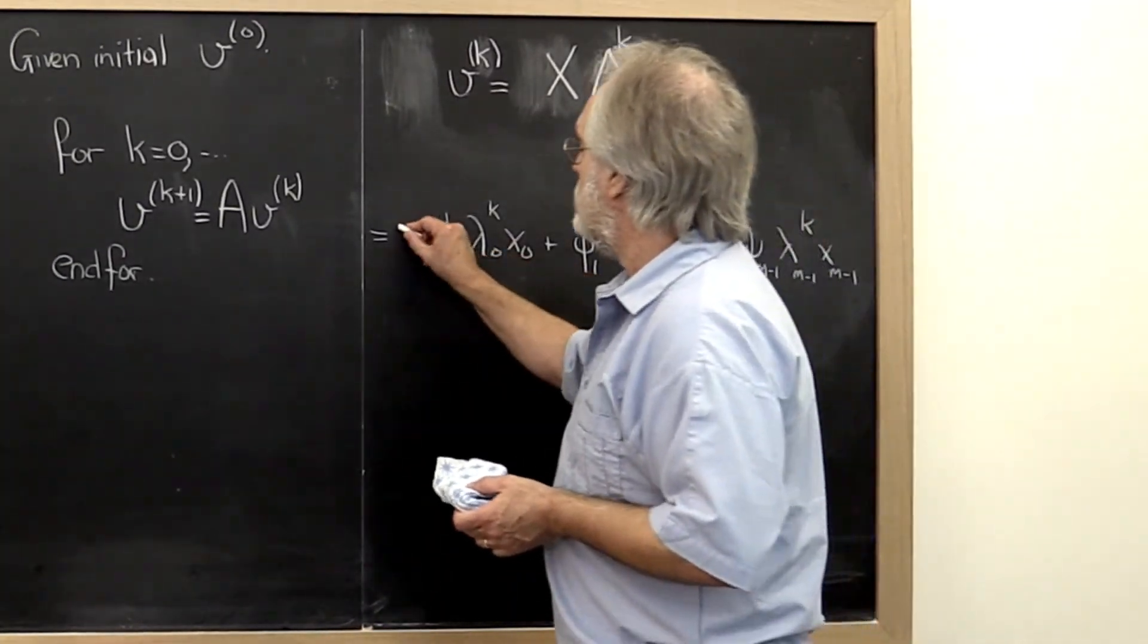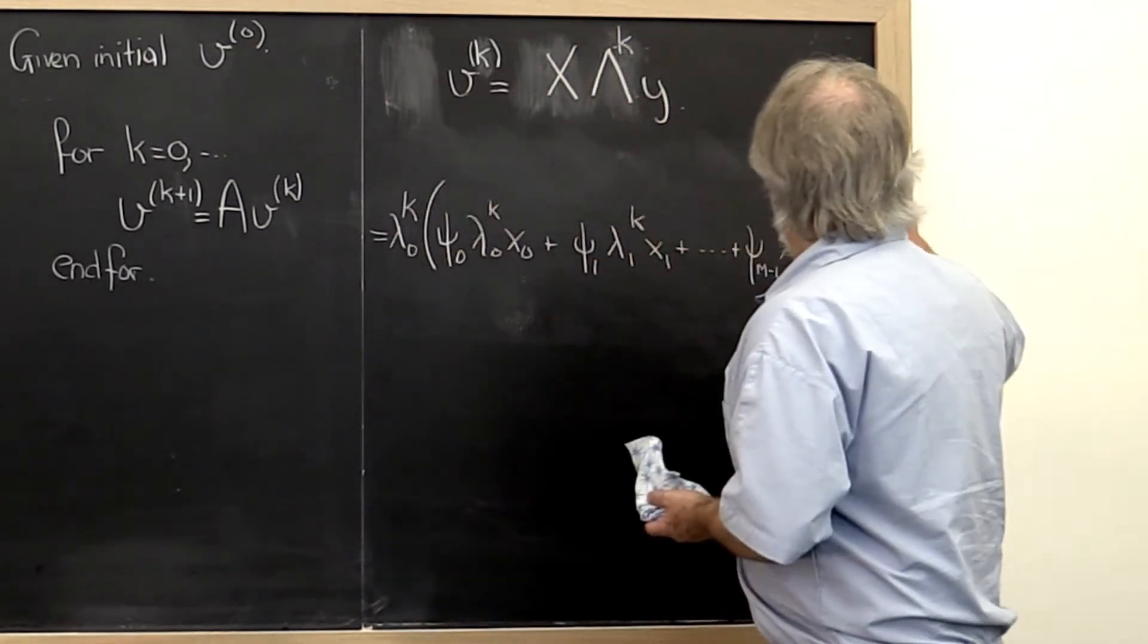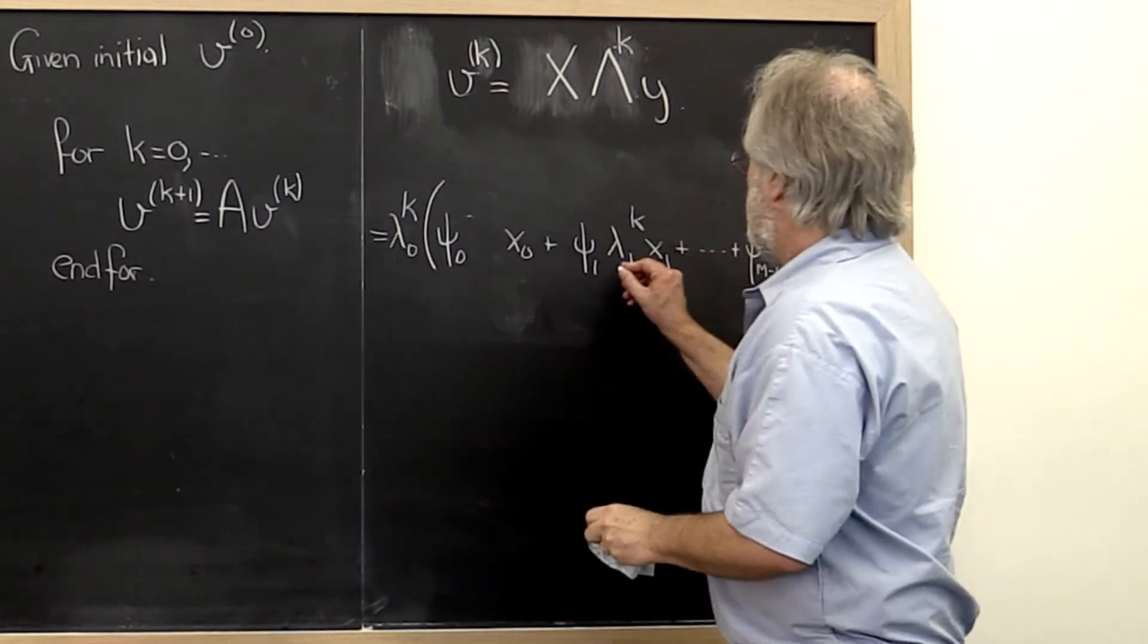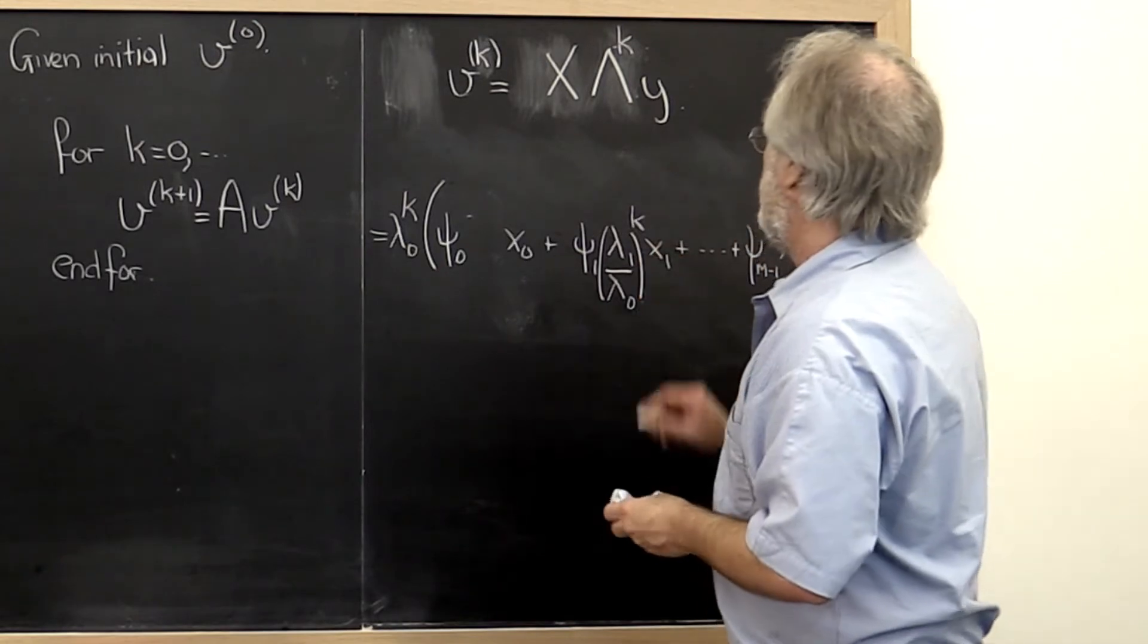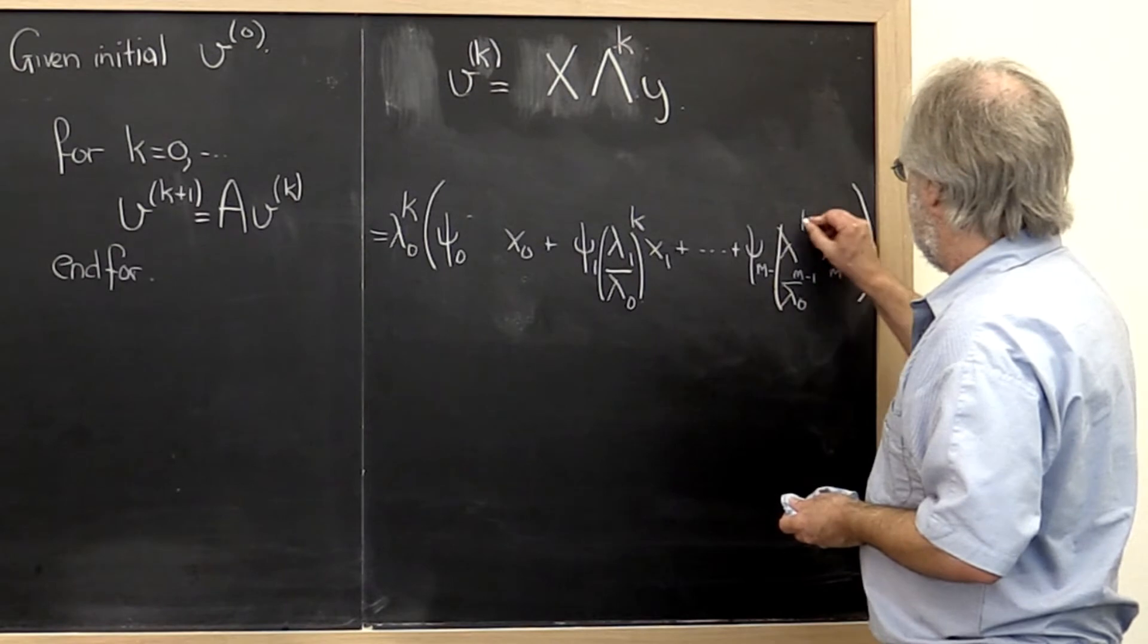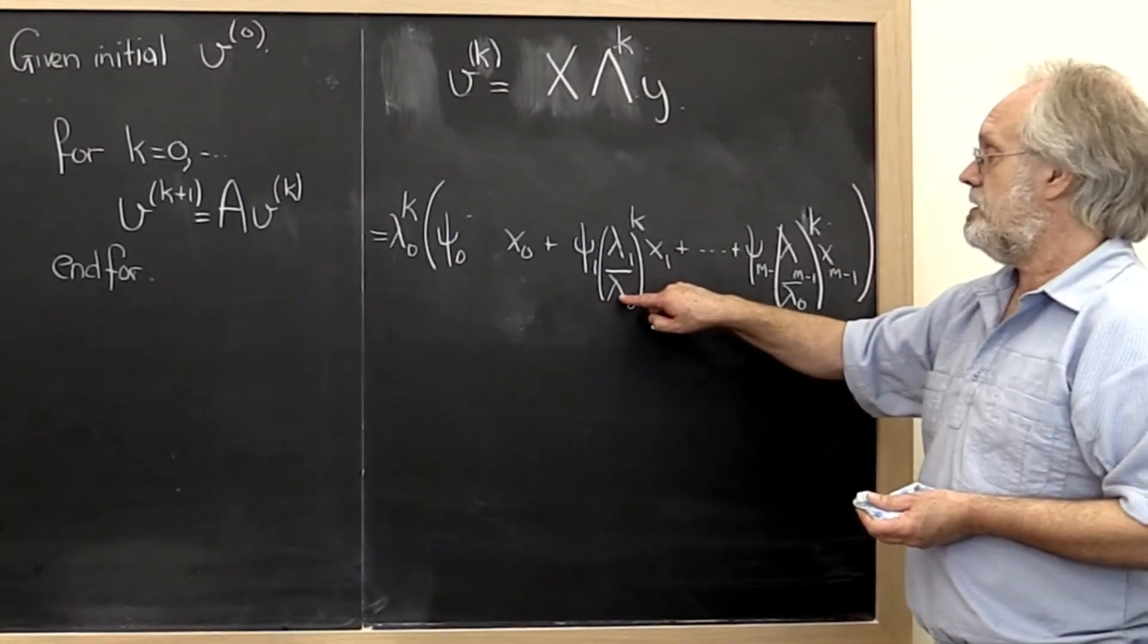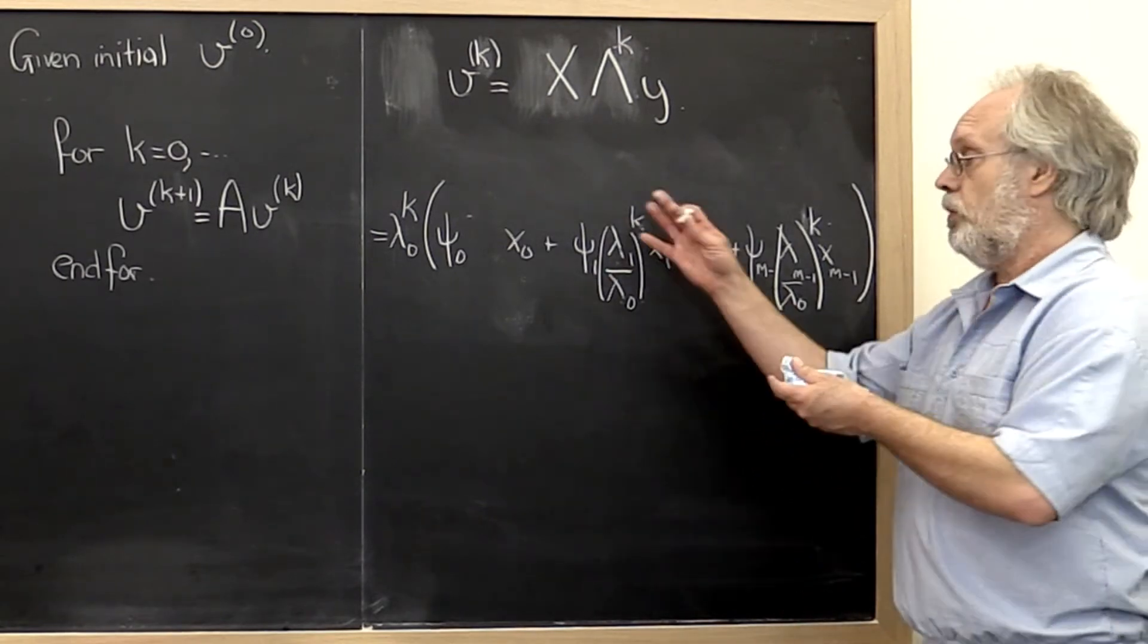So how can we make that clearer? Well, we can factor out a lambda 0 to the kth power. And then this right here is just 1. And all of these get divided by lambda 0. And then you end up with quantity to the kth power. And if this is a magnitude greater than that, then you know that raising it to the kth power eventually will wipe that out.